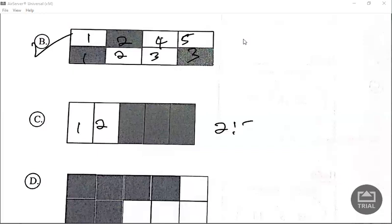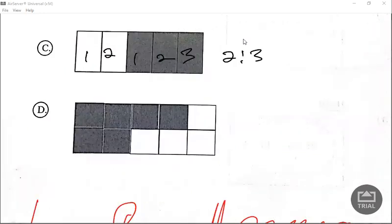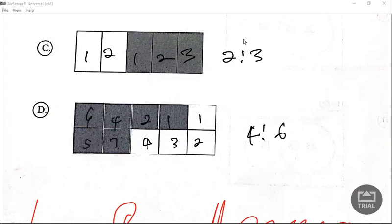Couldn't be this because the unshaded is 2 while the shaded is 3. This one would be 1, 2, 3, 4, so it's 4 to 6 also. Let's look at 14.